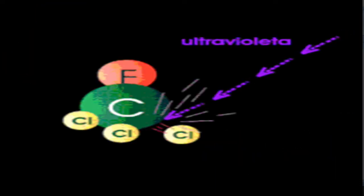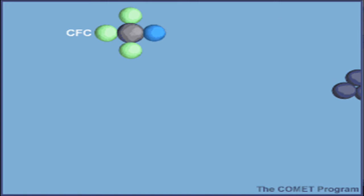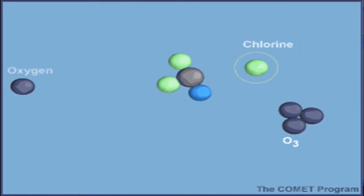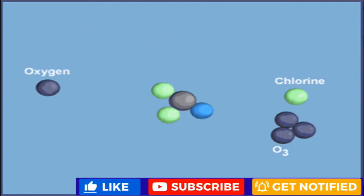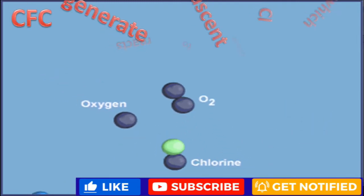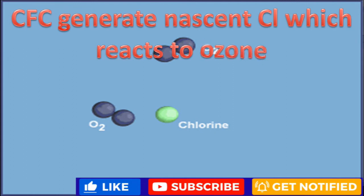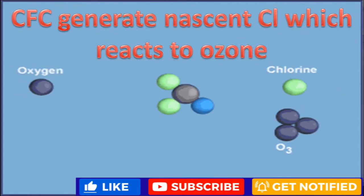The ozone molecule is being depleted by CFC products, methane gases, and other chemicals. CFCs produce nascent chlorine, which reacts chemically with the ozone molecule and breaks it down into oxygen. One CFC molecule can destroy one lakh molecules of ozone. It is the main chemical responsible for depletion of the ozone layer.